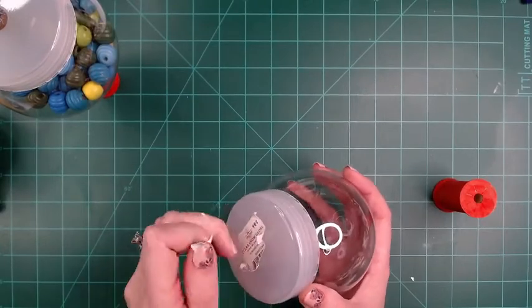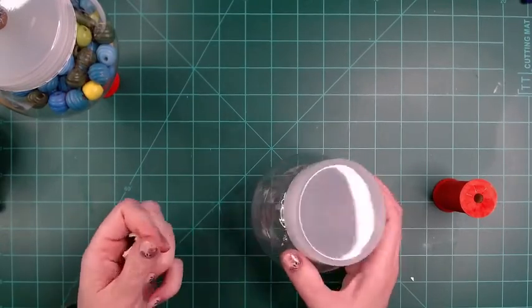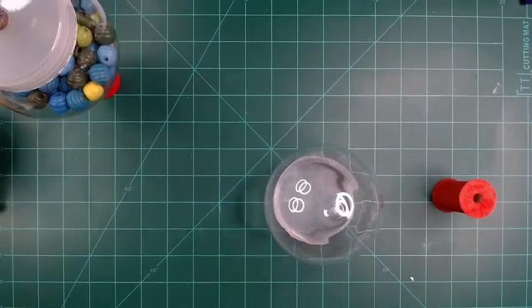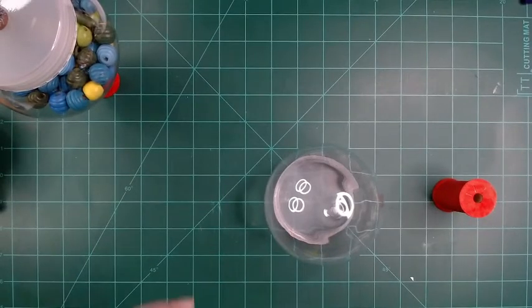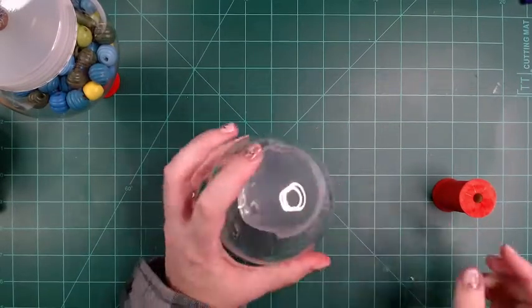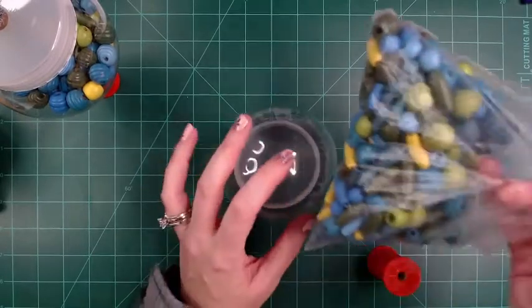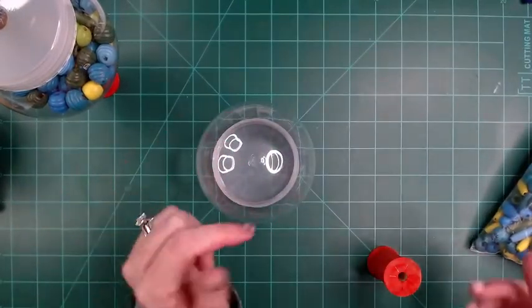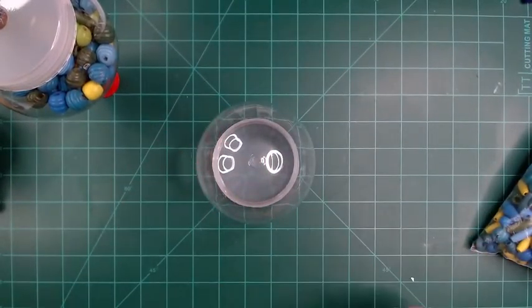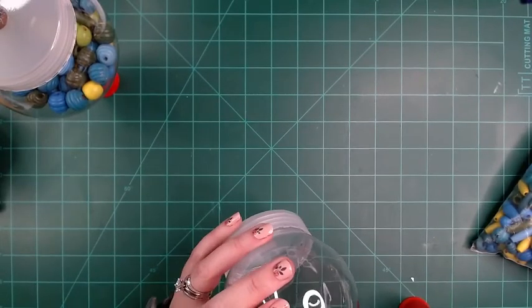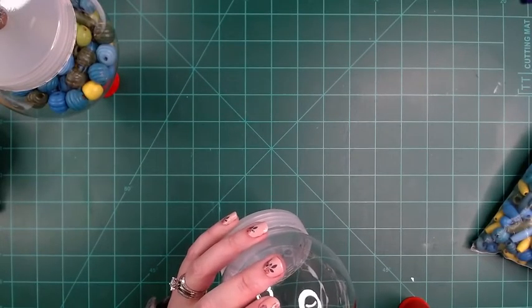You can put candy in this as well - Hershey Kisses, whatever. I would probably put wrapped candy in it if it was me, but whatever. I'm going to use these beads. So you'll need something to put in there, and then hot glue is what I'm going to use for it.